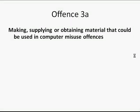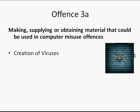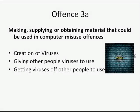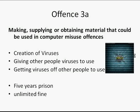The fourth offense, known as offense three A, is the making, supplying or obtaining of material that could be used in computer misuse offenses. This means the creation of viruses even if you don't use them, giving other people viruses so they can use them, or getting viruses off other people so you can use them. This is the worst of the crimes, carrying a five year prison sentence and an unlimited fine.